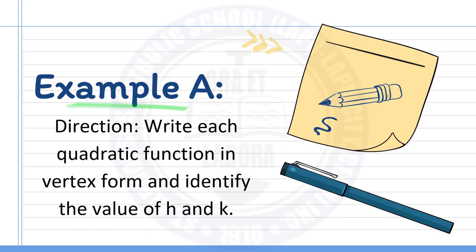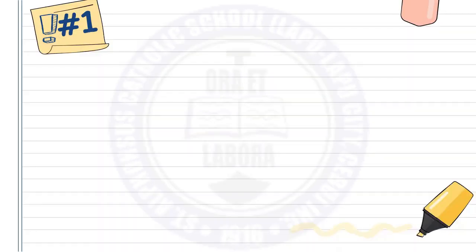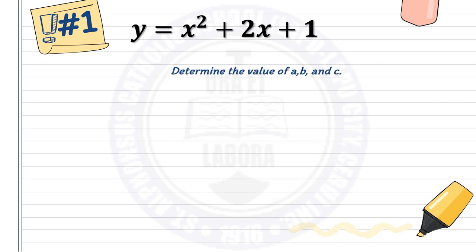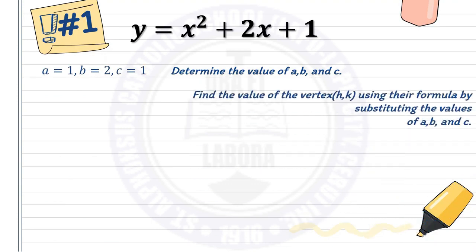Example A: Write each quadratic function in vertex form and identify the values of h and k. Example number 1: y equals x squared plus 2x plus 1. First, determine the values of a, b, and c. Here, a is 1, b is 2, and c is 1. Next, find the vertex (h, k) using their formulas by substituting the values of a, b, and c.